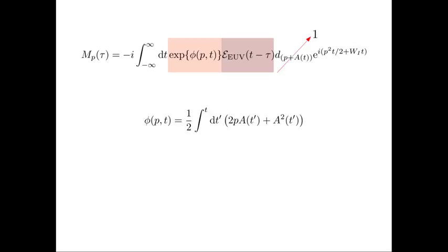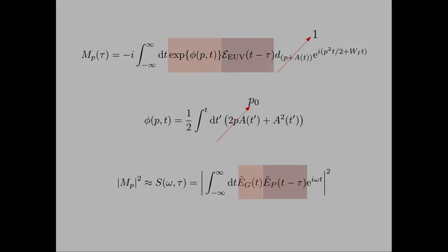By assuming one can neglect the dipole transition matrix element and that the momentum term in phi can be approximated by the central momentum of the ionized electron packet, the expression takes on the exact form of a FROG spectrogram. One can then use a FROG algorithm to retrieve information about the attosecond EUV and IR pulses.